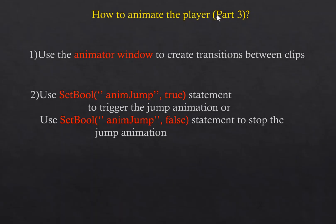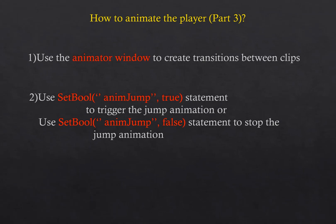To animate the player, you must first use the Animator window to create transitions between clips. For the coding part, use 'setBool' with the 'animJump' parameter set to true to trigger the jump animation, or set it to false to stop the jump animation. In the next video we'll do some more setup.